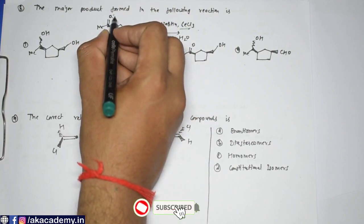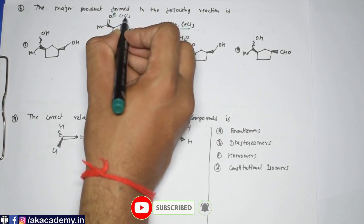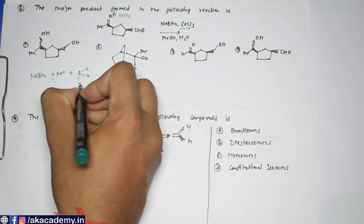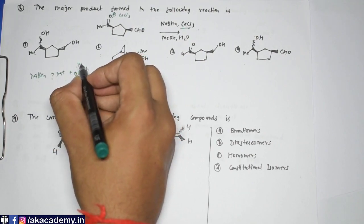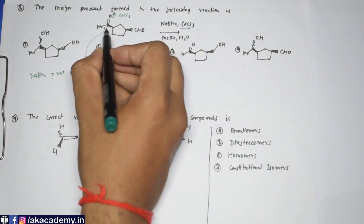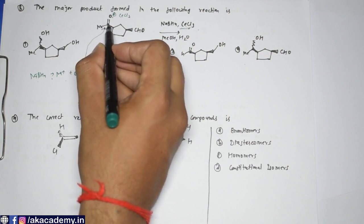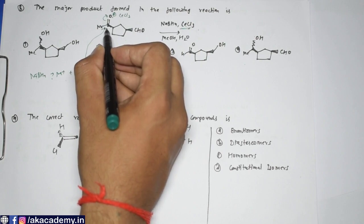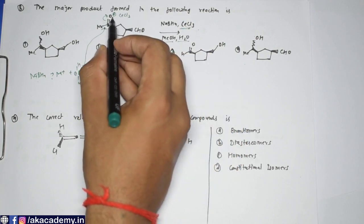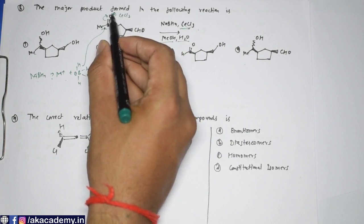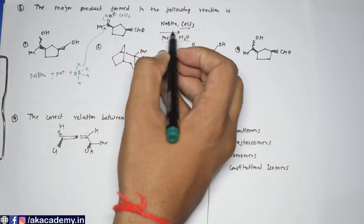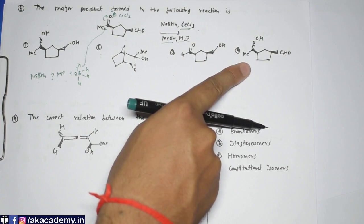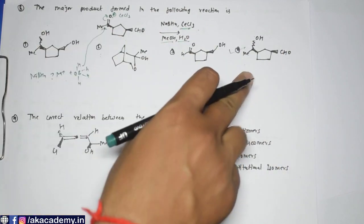CeCl₃ coordinates with oxygen to form O⁺–CeCl₃. NaBH₄ gives Na⁺ and BH₄⁻, and hydride is delivered at the carbonyl carbon. After delivery, the bond shifts and we get O–CeCl₃, with one hydrogen added. Then with MeOH/H₂O, CeCl₃ is removed and the product is –OH. So selectively the ketone is reduced and the correct option corresponds to that product.